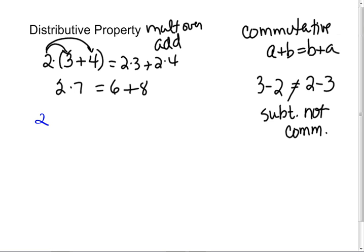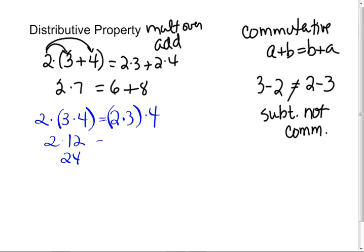Some of you want to do this: can you distribute multiplication over multiplication? No. This is the associative property—this is the same as 2 times 3 times 4. Arithmetic is a binary operation; you can only do two things at once. It's 2 times 12, which is 24, or 6 times 4, which is 24.